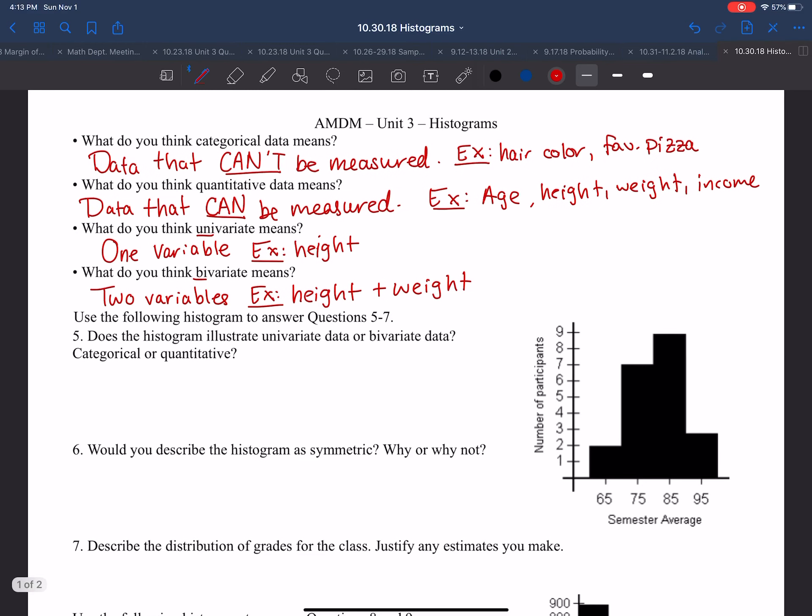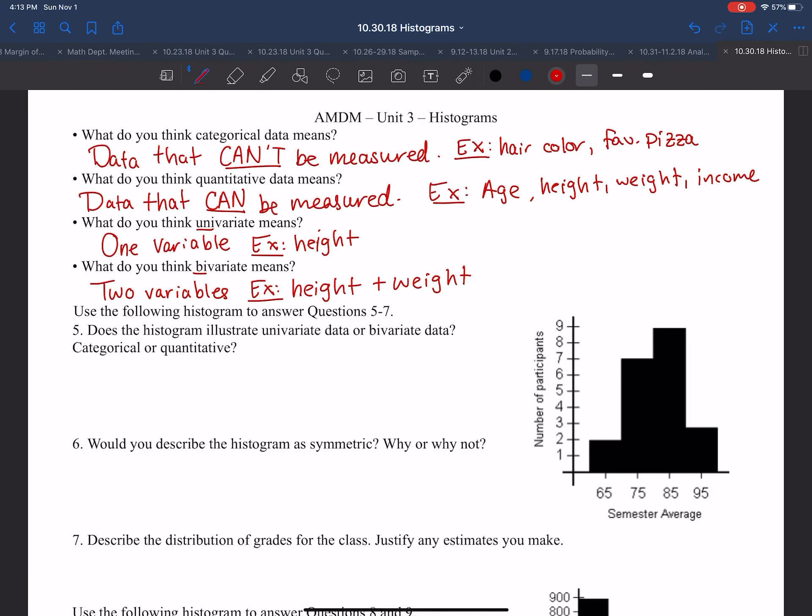Number five says, does the histogram illustrate univariate data or bivariate, categorical or quantitative? How many variables are we looking at? Well, we're looking at the semester average over the number of participants. We're just looking at our only data point, semester average. So it's going to be univariate. And we're looking at grade averages, 65 to 95. So this is going to be quantitative.